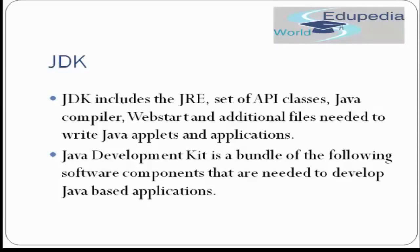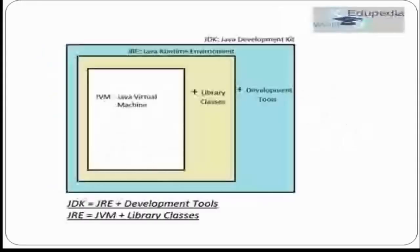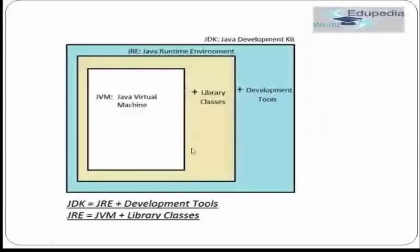Java Development Kit is a bundle of software components needed to develop Java-based applications. This figure shows that JDK — the Java Development Kit — includes the JRE, the Java Runtime Environment, and the Java Runtime Environment includes your JVM. JDK is a superset, JRE is a subset, and JVM is a subset of JRE. JDK contains JRE and development tools, and JRE contains JVM and library classes.